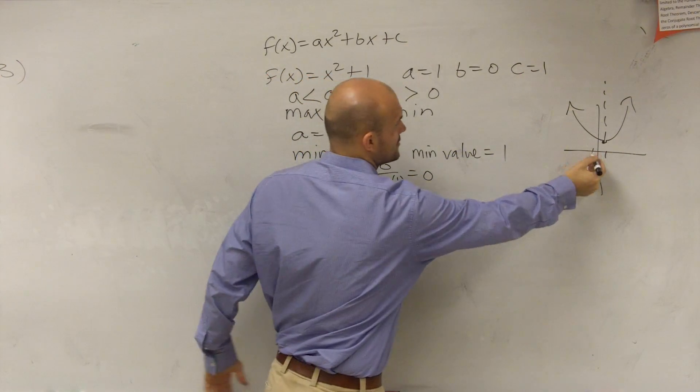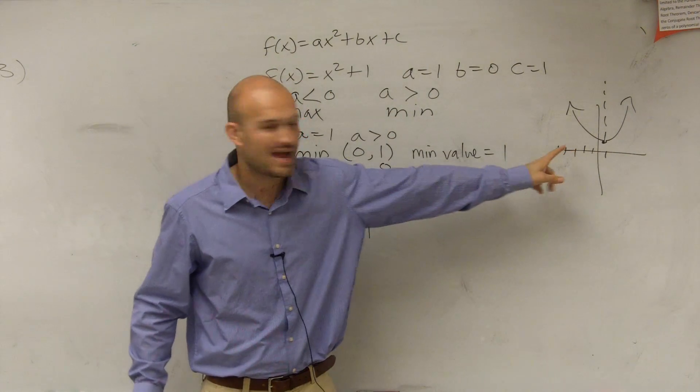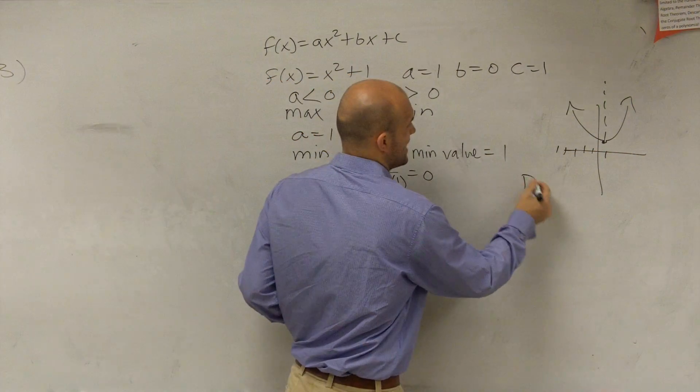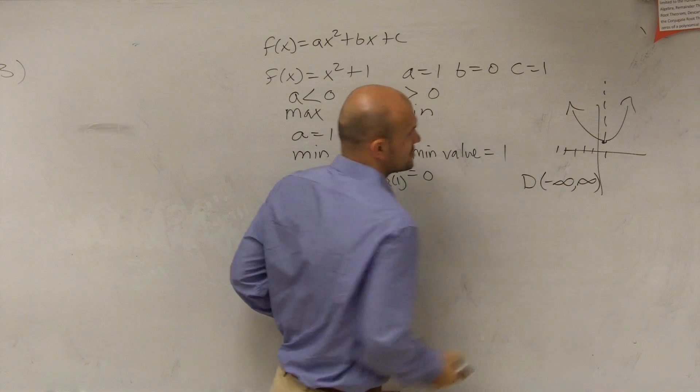So for every single x value, I can create a coordinate point on my function, right? For every single x value. So therefore, we can say our domain is all real numbers, or it goes from negative infinity to infinity.